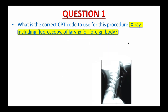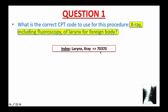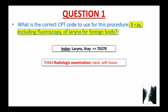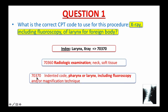Alright, let's see how you did. In the index in your CPT book, if you look under the main term 'larynx x-ray,' it will give you just one code: 70370. Your next step is to double-check this code in the tabular list. Because 70370 is an indented code, it includes all information from the parent code 70360 — radiologic examination, neck soft tissue — except 70370 is for pharynx or larynx including fluoroscopy. This is the right code to use for this procedure. The correct answer is 70370.